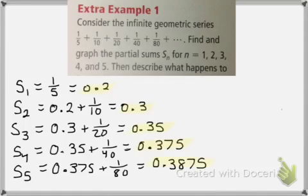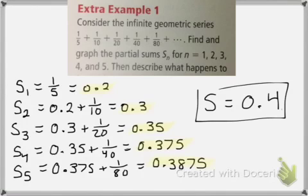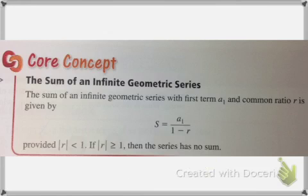So you can see that all of these sums are getting closer and closer to 0.4. So that is the sum of this infinite geometric series. Now, like I previously mentioned, this can take some time to do it using partial sums. So luckily there is an equation that we can use.